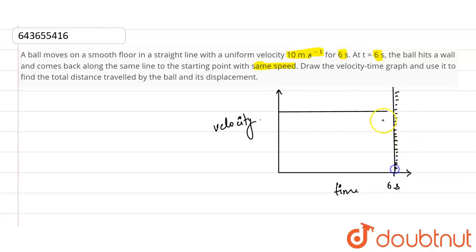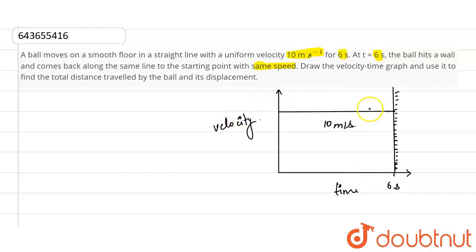After six seconds, the ball hits the wall and comes back along the same line to the starting point with the same speed. So velocity is uniform at 10 meters per second for six seconds, then the ball hits the wall and comes back. There are two motions: the first is forward motion and the second is backward motion.